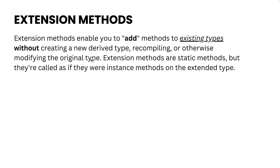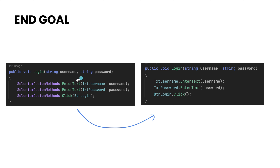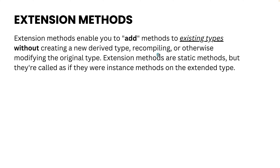For example, if we want to add a method to the IWebElement type, normally we would need to modify the Selenium source code, recompile it, or create a new derived type of the IWebElement interface. With extension methods, we don't have to do any of these things. We can directly add methods to an existing type, and extension methods are static methods called as if they were instance methods of the extended type.